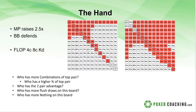First question: who has more combinations of top pair — king — on the king-diamonds, eight-clubs, four-clubs board? Looking at these two ranges, which player has more total combinations of top pair? This is a bit of a trick question. The big blind actually has more total combinations of top pair. Middle position plays king-jack offsuit, king-queen offsuit, and suited kings down to king-eight suited — that's about 39 total top-pair combinations.